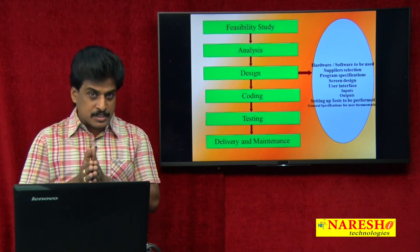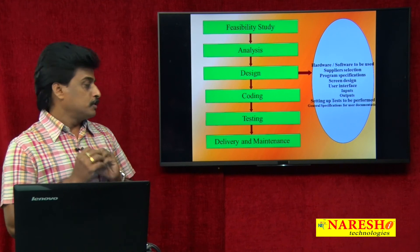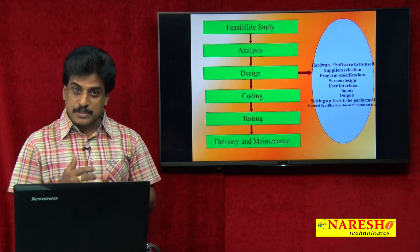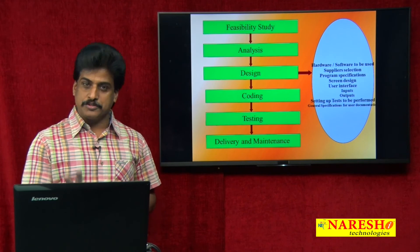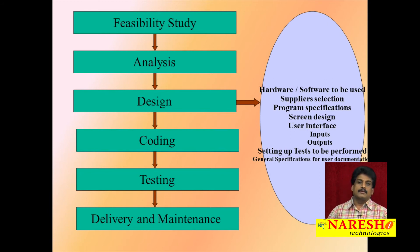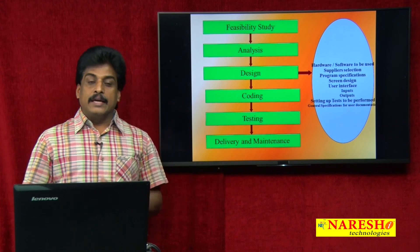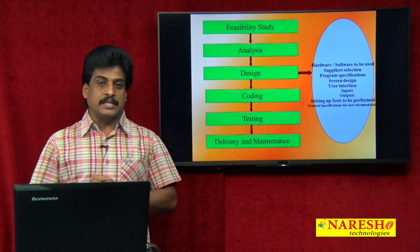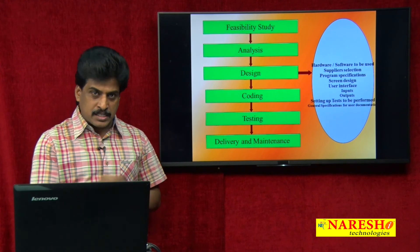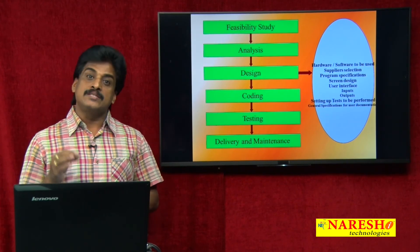Once testing is successfully completed, the project moves to the delivery phase. Delivery doesn't happen immediately after testing — first, UAT (user acceptance testing) is performed. UAT is classified into two types: alpha testing and beta testing.